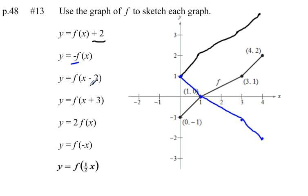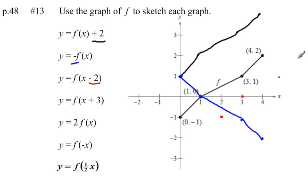Our third graph: y equals f of x minus 2. Adding or subtracting a number inside the parentheses gives us something different from the first sketch. Adding or subtracting at the end gives a vertical shift, but subtracting a number within the function — applied to x itself — gives a horizontal shift. Be careful: subtracting 2 might appear to shift left, but we actually shift to the right 2. So every point in our original function shifts right 2 units, and connecting those points gives us y equals f of x minus 2.